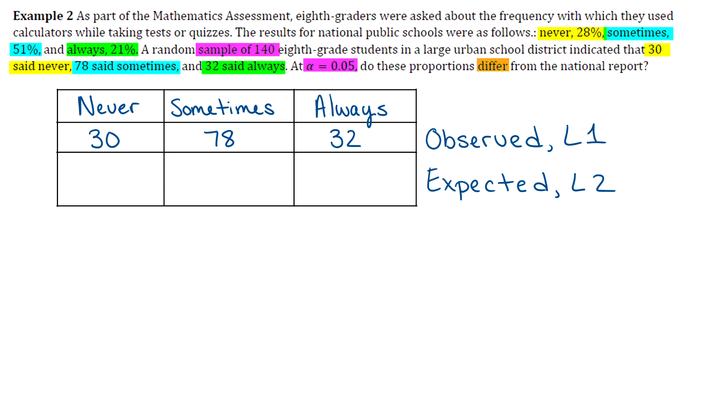So what would we expect as far as that sample? Well, we would expect that 28% of the total of 140 would have said never. So we're going to have to figure out what 28% of 140 is, and that'll be the expected amount for the never category. So I'm just going to show my work in that box there. So 28% of 140, we'll do 0.28 times 140, which comes out to 39.2.